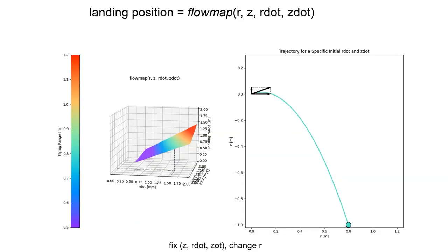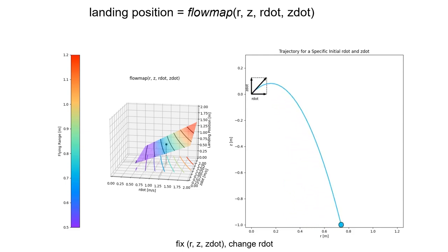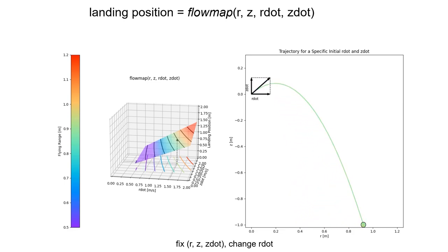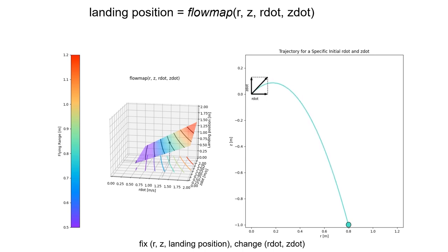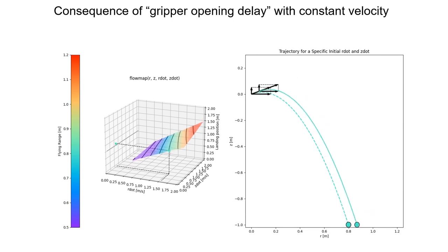Let's first have some intuitive understanding of the flow map, which maps from initial position and velocity to landing position. If we change the initial horizontal position while fixing the initial velocity, the landing position will change while the flying range remains constant. By only varying horizontal velocity, we can also change the landing position due to the change of flying range. By changing horizontal and vertical velocity in the correct way, we can maintain the same initial position and the same landing position. We can now see the consequence of a larger opening delay with constant velocity during the release: as the initial position moves to the right, the landing position also moves to the right significantly.